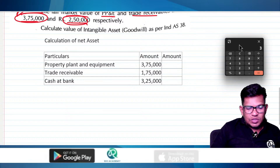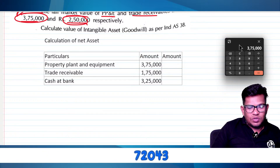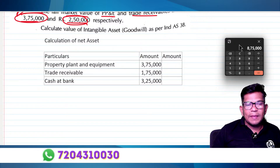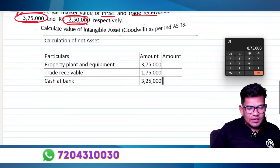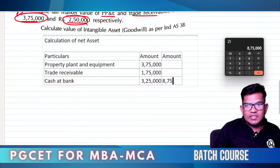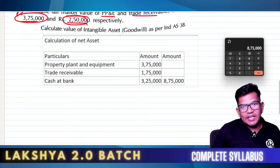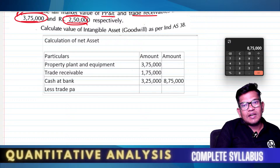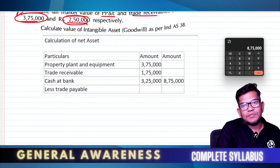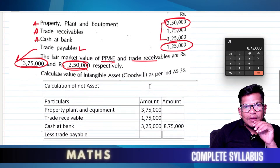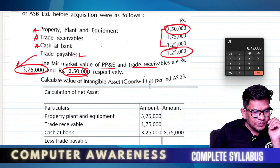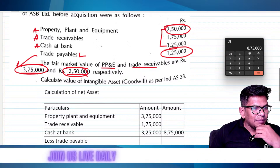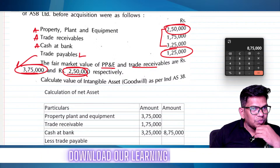Adding up: 3 lakh 75 thousand plus 1 lakh 75 thousand plus 3 lakh 25 thousand — total assets come to 8 lakh 75 thousand. Now from total assets, less trade payable.